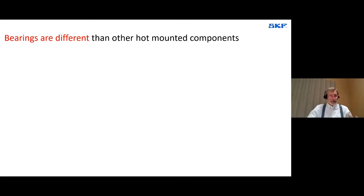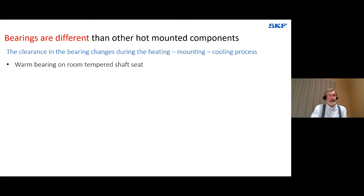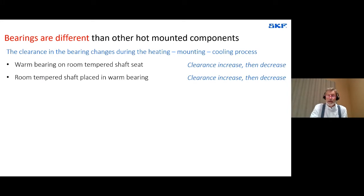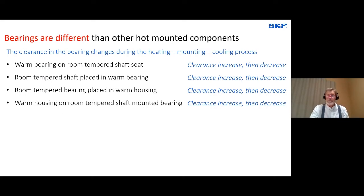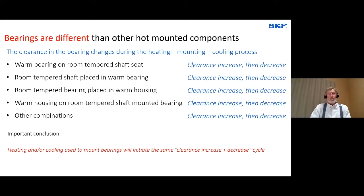Because we can't move the thing if it's a bearing or a hub either on or off. This is not where we want to end up. So I think the easy and fast centering when mounting is in the core of the choice of vertical shaft. And this could, for instance, be a warm bearing fitted onto a room tempered shaft seat. Compared to hubs or gears, bearings behave differently. And this is because the clearance in the bearing, it will change during the heating, mounting, cooling process. Other combinations will follow the same pattern. So, already here, we can draw an important conclusion. Heating and or cooling used to mount bearings will initiate the same clearance increase, followed by clearance decrease cycle.